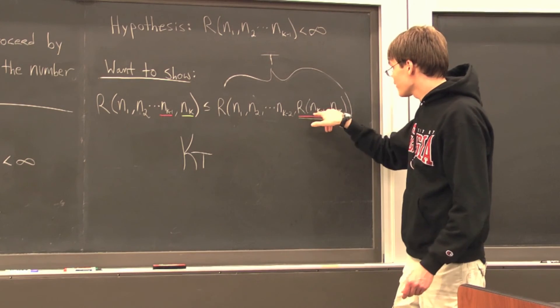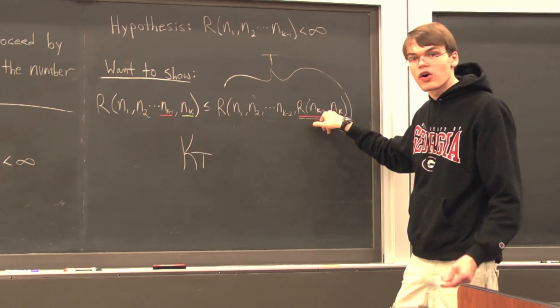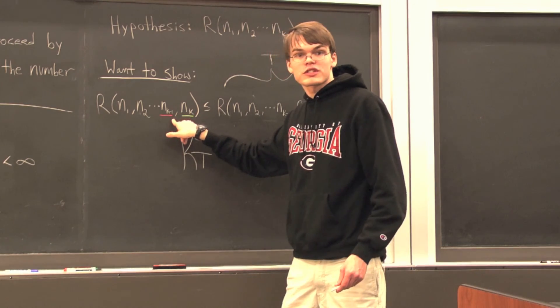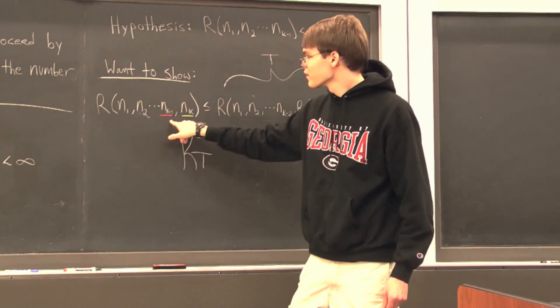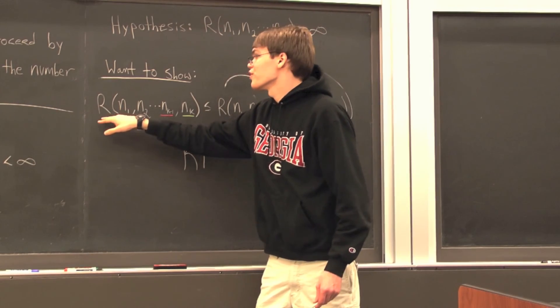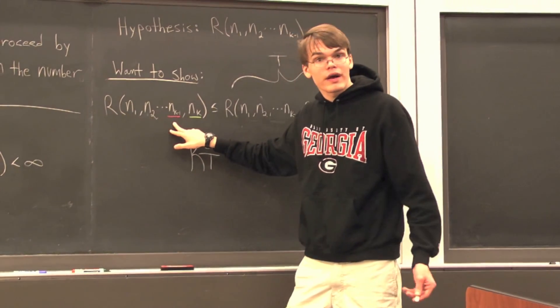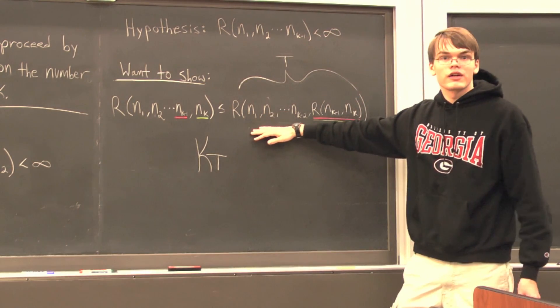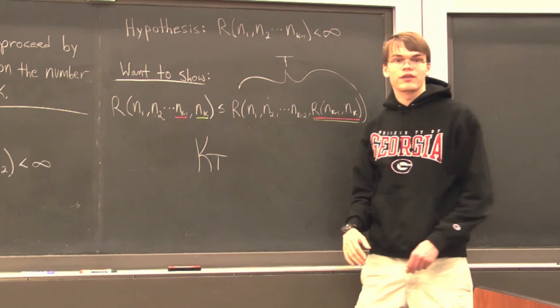And so if either of those two cases hold, well, that satisfies the respective cases over on this side of the inequality. And hence, we've shown that our Ramsey numbers on k colors are going to be less than this finite number t. And that concludes our proof.